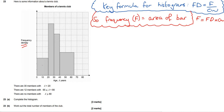If we take a look at this first bar, for example, without even looking at the question, we can see that whatever the frequency density is on the side, and whatever the class width is on the bottom, when we multiply them, we're going to get the frequency, and that is the area of the bar.